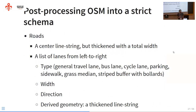OSM to Streets basically takes OSM data, has a very opinionated schema on how to represent streets, and does a lot of post-processing to do that transformation. The schema is more or less roads and intersections. A road goes between exactly two intersections, still has a center line like OSM, but now also has a total width so you have a full polygon. And critically, there's a list of lanes going from left to right.